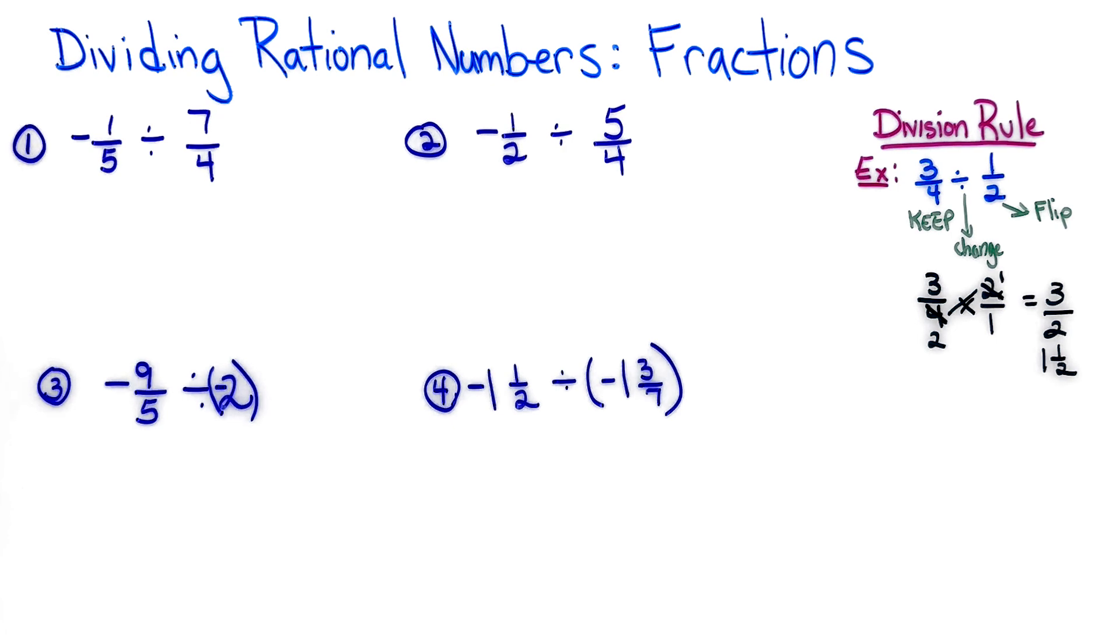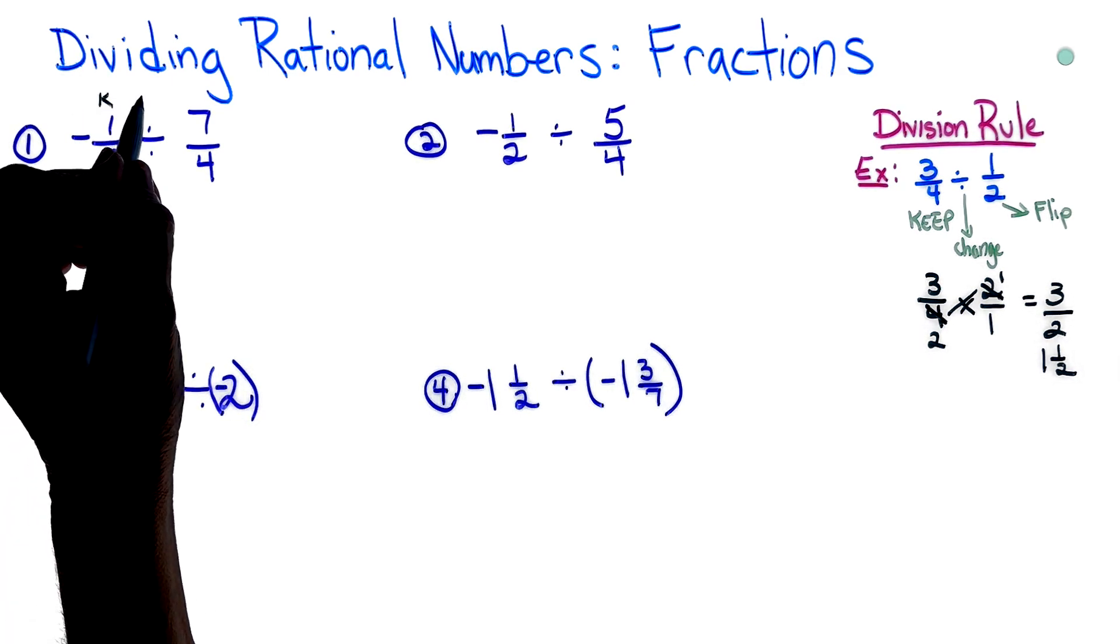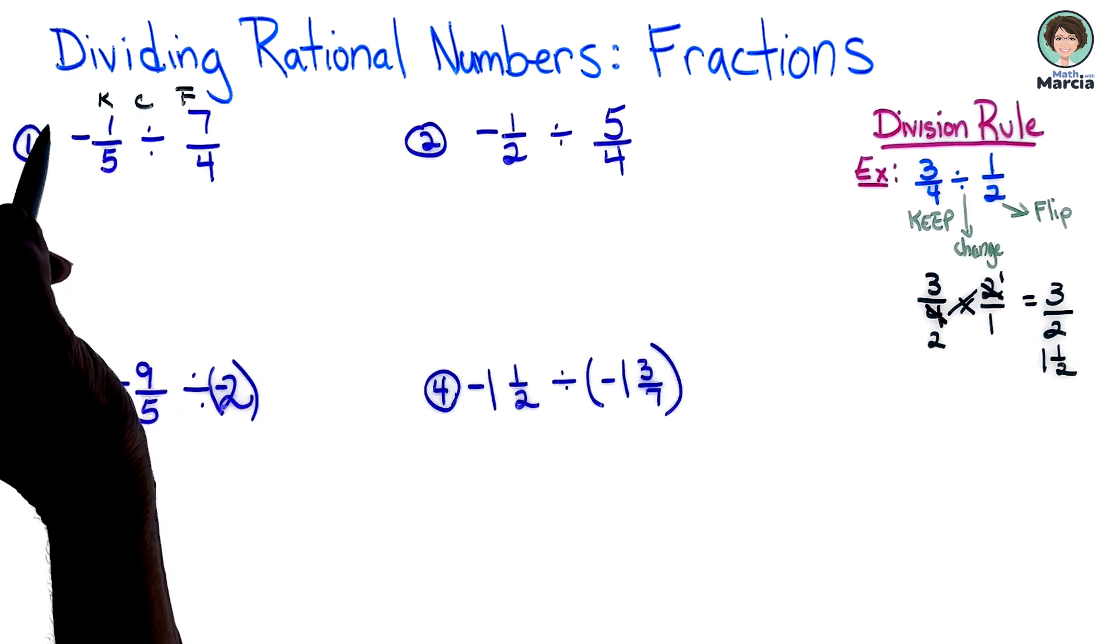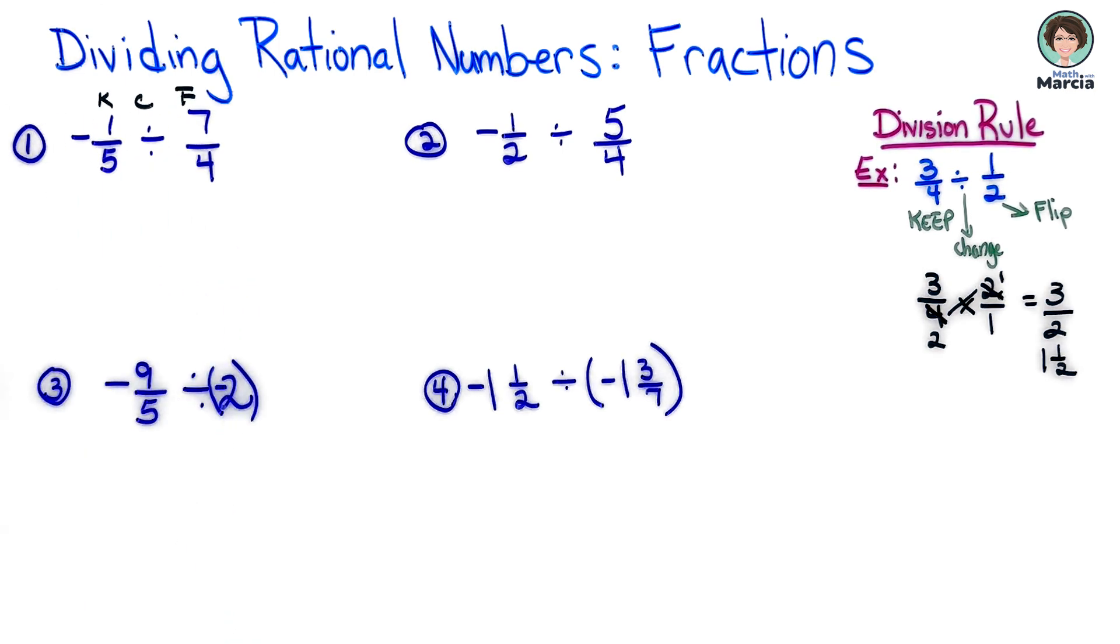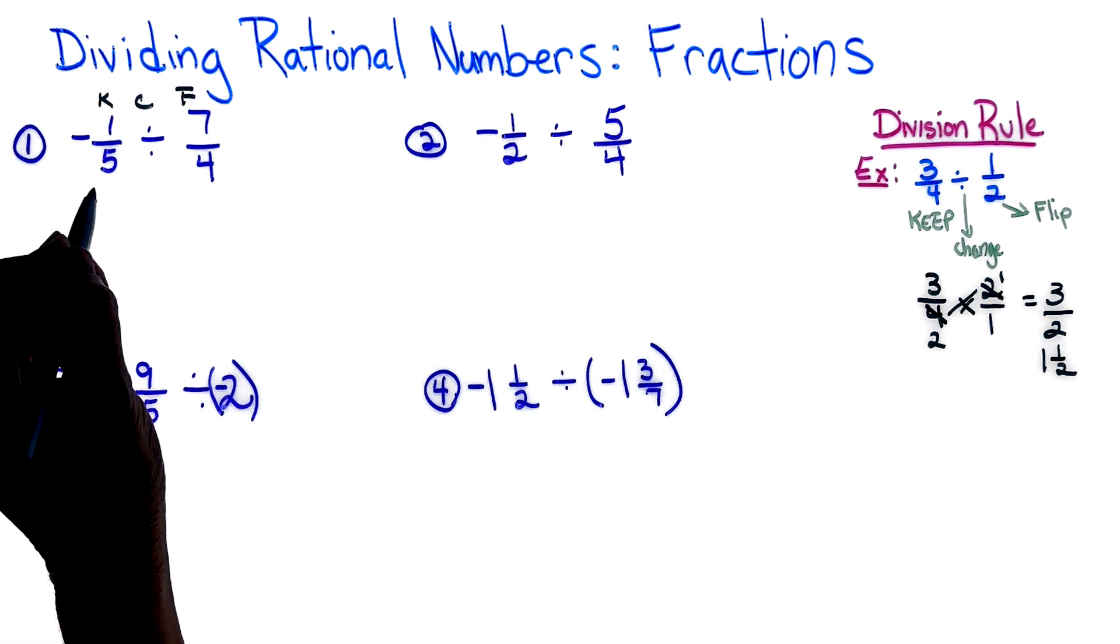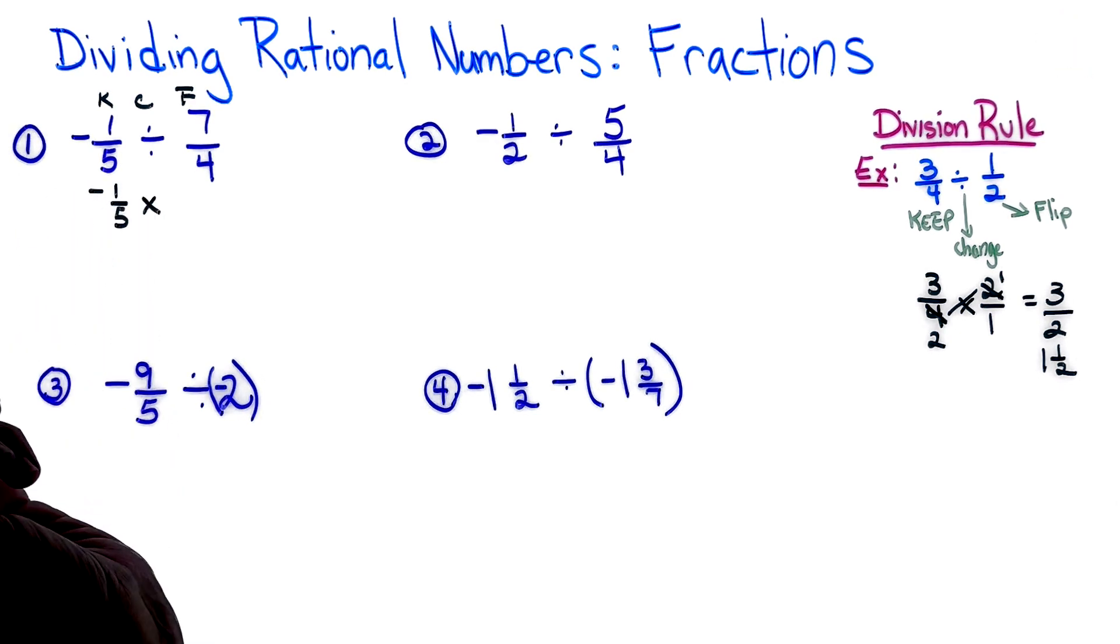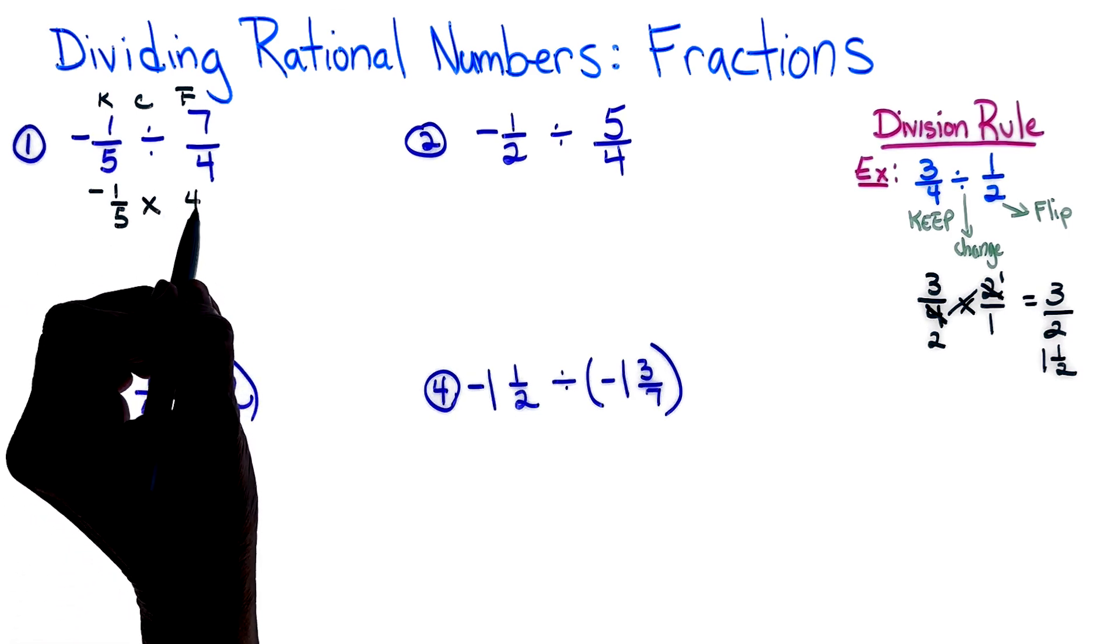All right, well let's go to some of the problems that have negatives and positives. It's no big deal, we just have to remember the sign in the end. So I'm going to keep, change the sign, and flip. I like to write that up there to remind me - KCF, keep change flip. So it's a negative 1/5, change the sign to multiplication, flip and write the reciprocal, always just of whatever is after your division symbol.